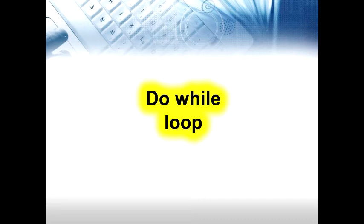Do-while loop. Unlike the for and while loops, the do-while is an exit control loop — it evaluates its test expression at the bottom of the loop after executing the loop body. This means the do-while loop always executes at least once. In for and while loops, the test expression is evaluated at the beginning before executing the loop body. If the test expression evaluates to false for the first time, those loops are never executed. In cases where the loop body must execute at least once regardless of the initial state, the do-while loop is the obvious choice.